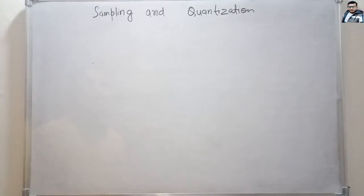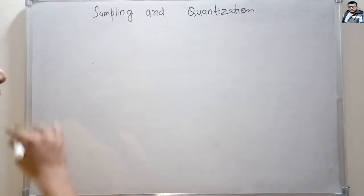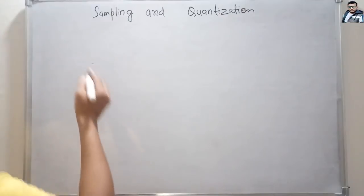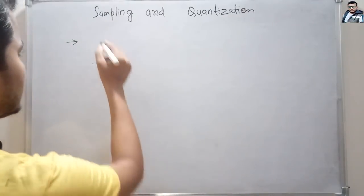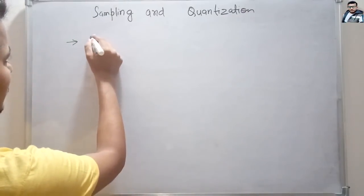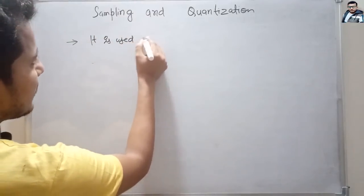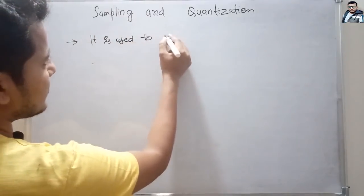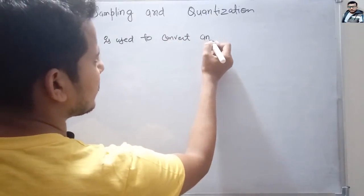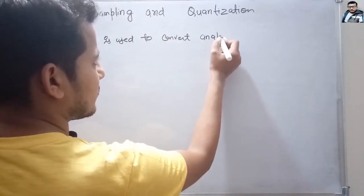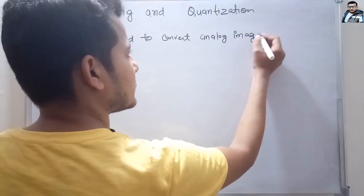Hi friends, let's see sampling and quantization. These are the two terms used to convert an analog image to a digital image.